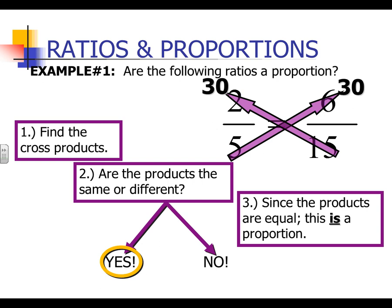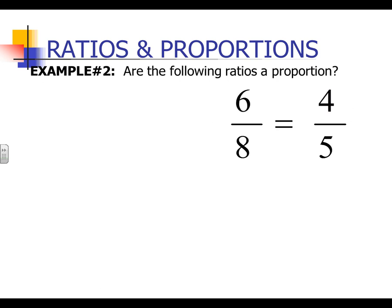If you don't get the same cross products — if you don't get the same number, if I didn't get 30 and 30, let's say I got 30 and 29 — then you cannot technically call it a proportion, even if it's written that way.